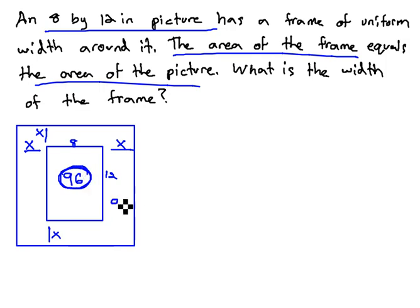The frame having the same area is also 96, which means for total area in the entire thing, 96 and 96, we have 192 total area that we're talking about.